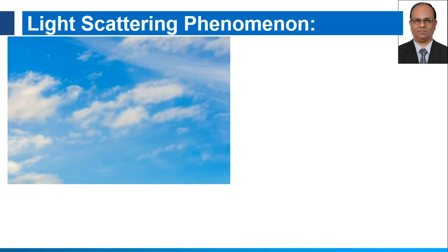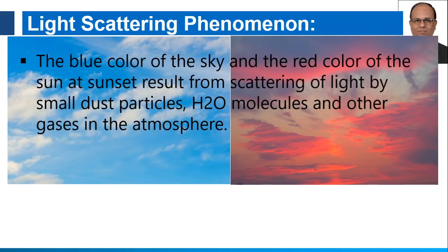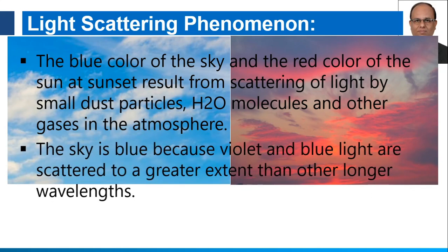One thing which we are normally observing is that our sky is blue at daytime, and at sunset or sunrise the sky has a certain dark color like this. The blue color of the sky and the red color of the Sun at sunset results from scattering of light by small dust particles, water molecules, and other gases in the atmosphere. The sky is blue because violet and blue light are scattered to a greater extent than the other longer wavelengths.